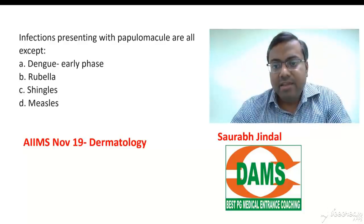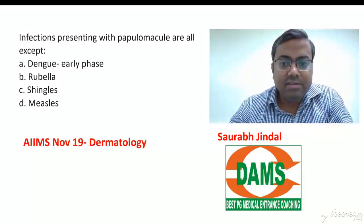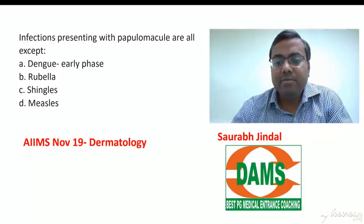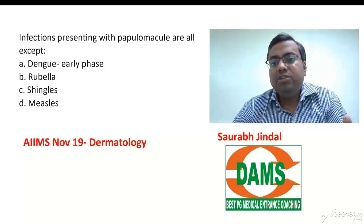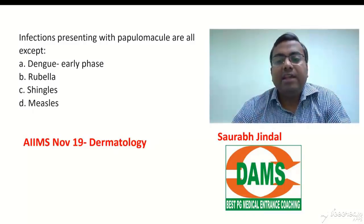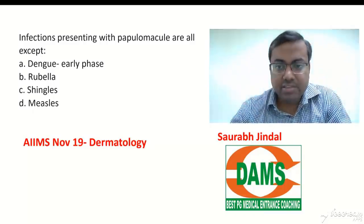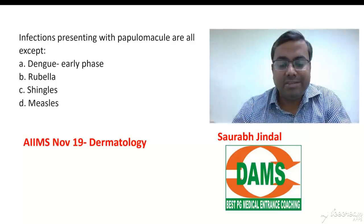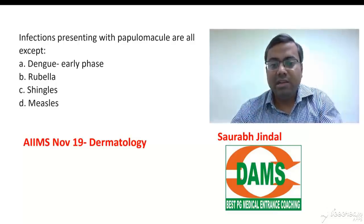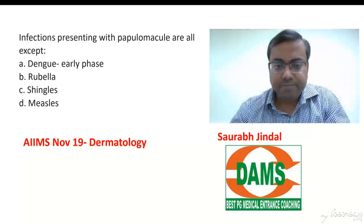Now the dengue rash — dengue is obviously a febrile illness and it's very prominently going to have a rash. The rash of dengue is very classically what we call a biphasic rash. Biphasic means it's got two phases: an early phase and a late phase.